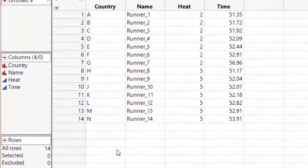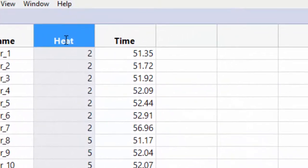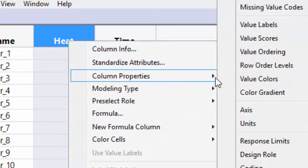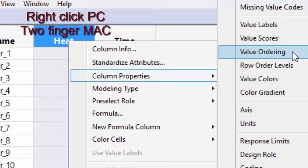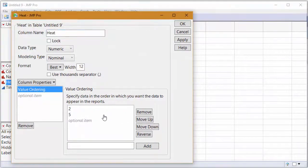Now, we are going to make one change here. We are going to take heat and turn it into a nominal variable. We will now right click on the top of heat and go to column properties and then go to value ordering. When you get to value ordering, make sure to click on 5 and go to move up. You can then hit apply and then OK. This will change the order and have it so the order in our problem is the same for the order in the question.